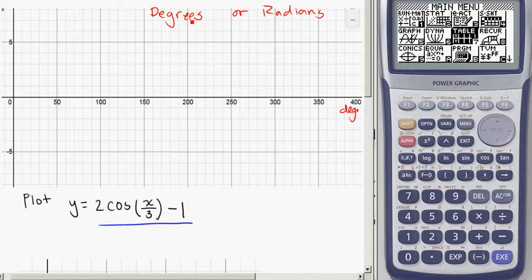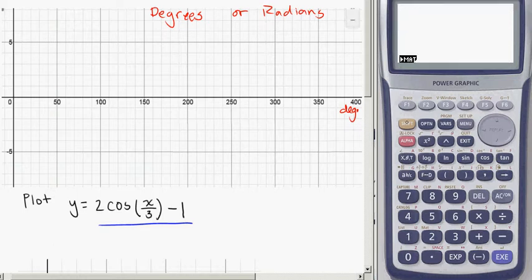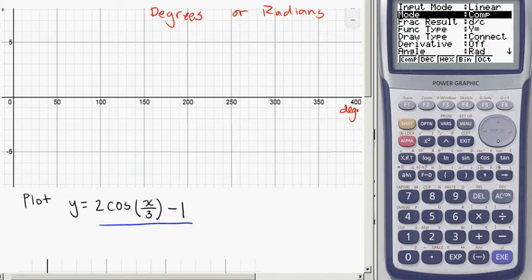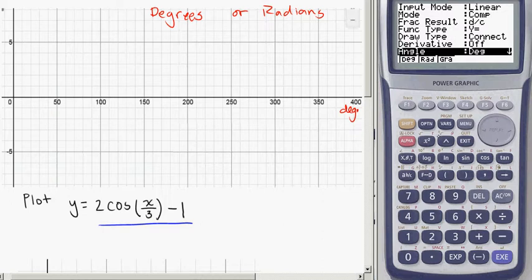The important thing to do will be to actually make sure that your calculator is in the appropriate mode. So from your normal run menu, Shift-Setup, scroll on down and look to see where you are. Right now I'm in radians. I'm going to flip to degrees because this axis is in degrees.